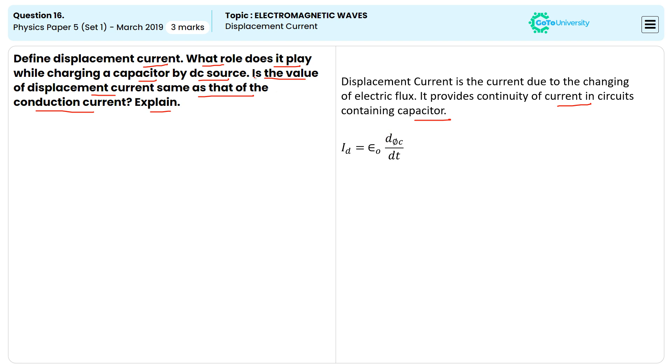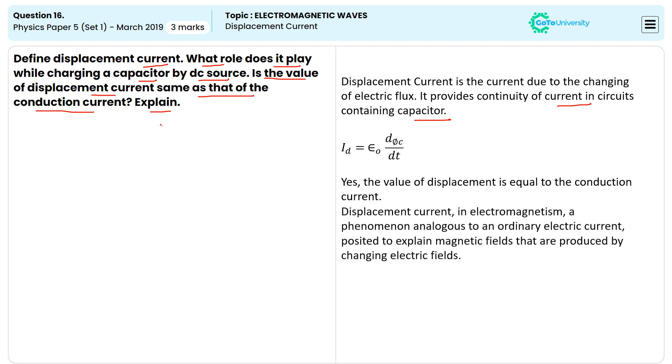And the second part here, is the value of displacement current same as that of the conduction current? Yes, the value of displacement is equal to the conduction current, where the displacement current in electromagnetism, a phenomenon analogous to an ordinary electric current, posited to explain magnetic fields that are produced by changing electric fields.